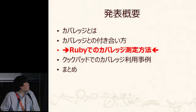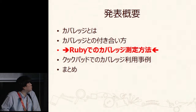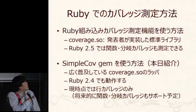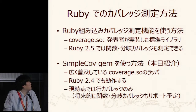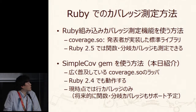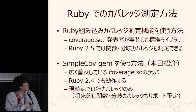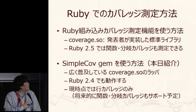Next I will talk about how to measure coverage in Ruby. There are mainly two ways. I made the coverage.so library. One way is to directly use this library — and as soon as Ruby 2.5 arrives, there's support. But this is a primitive library with no functionality to visualize, so it might be difficult to use directly. The other way is to use SimpleCov, which is a more convenient library.